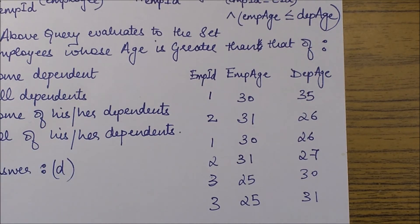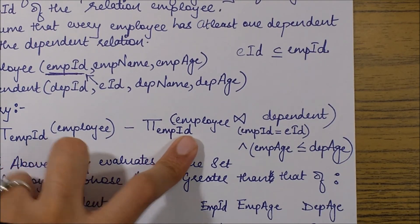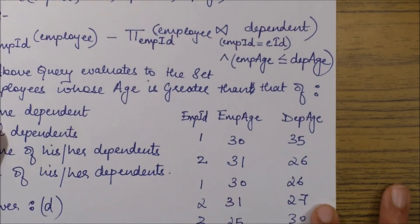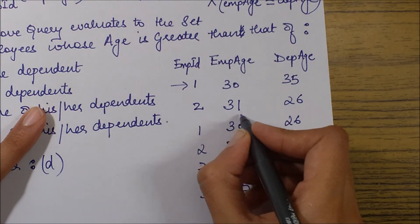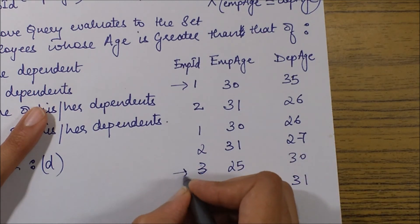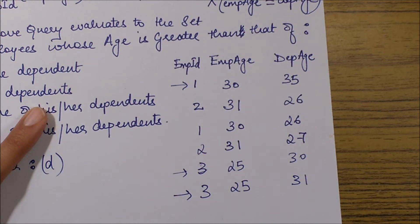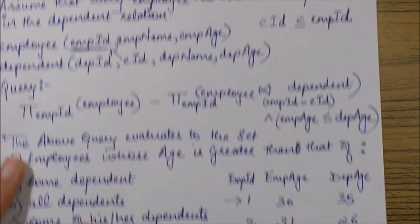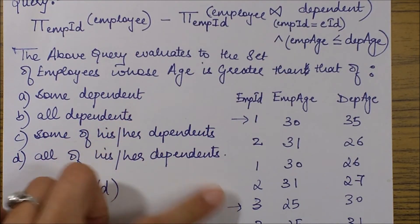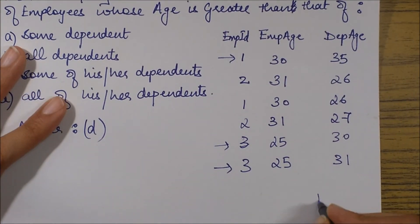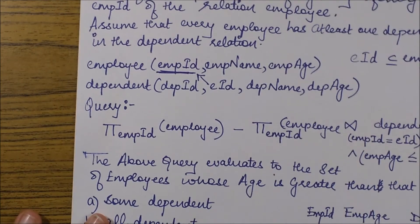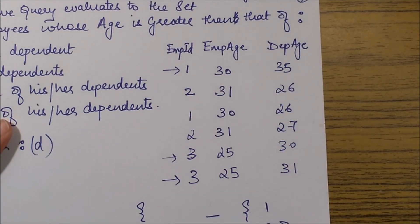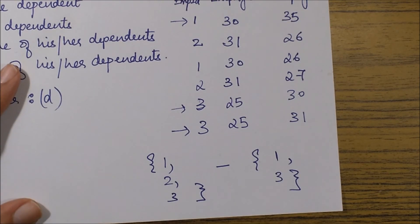Applying the query: first I find entries where employee age is less than or equal to dependent age. Those entries yield EMPID 1 and EMPID 3, because each has at least one dependent older than them. Projecting EMPID from these gives the set {1, 3}. The complete set of EMPIDs is {1, 2, 3}. Subtracting {1, 3} from {1, 2, 3} leaves EMPID 2.